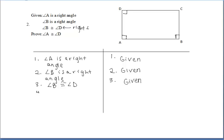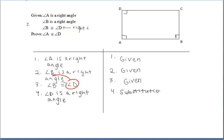But we somehow want to get A and D congruence. Since angle B is congruent to angle D, we can use the substitution property. Can we replace angle B in the statement that angle B is a right angle, and replace angle B with angle D since they're congruent? Therefore, we know that angle D is a right angle as well — and what we used there was the substitution property, since we physically replaced angle B with angle D in the statement.